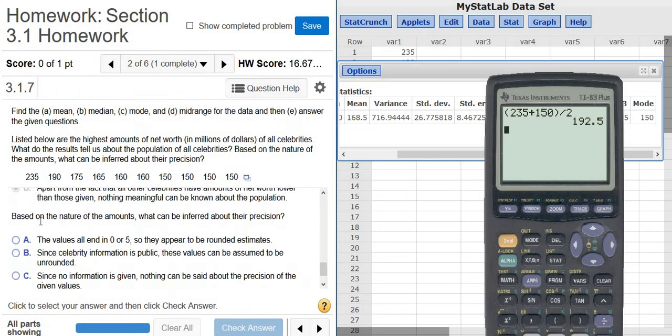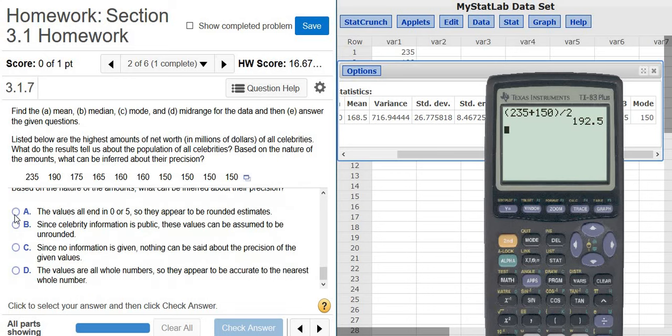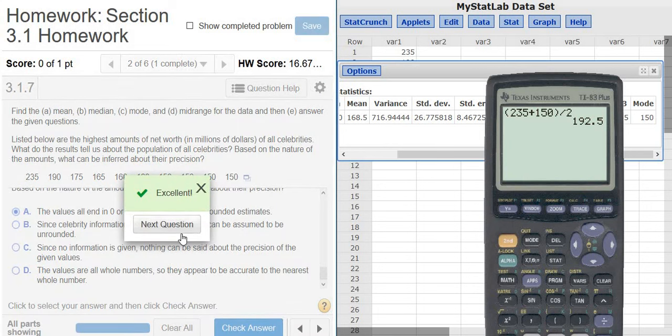Oh, there's another question. Based on the nature of the amounts, what can be inferred about their precision? Well, it looks like everything has been rounded because all the numbers end in 0 or 5. So all of these are estimates. Okay, that's it. It says next question. That means we have officially finished the question. I hope that made sense.